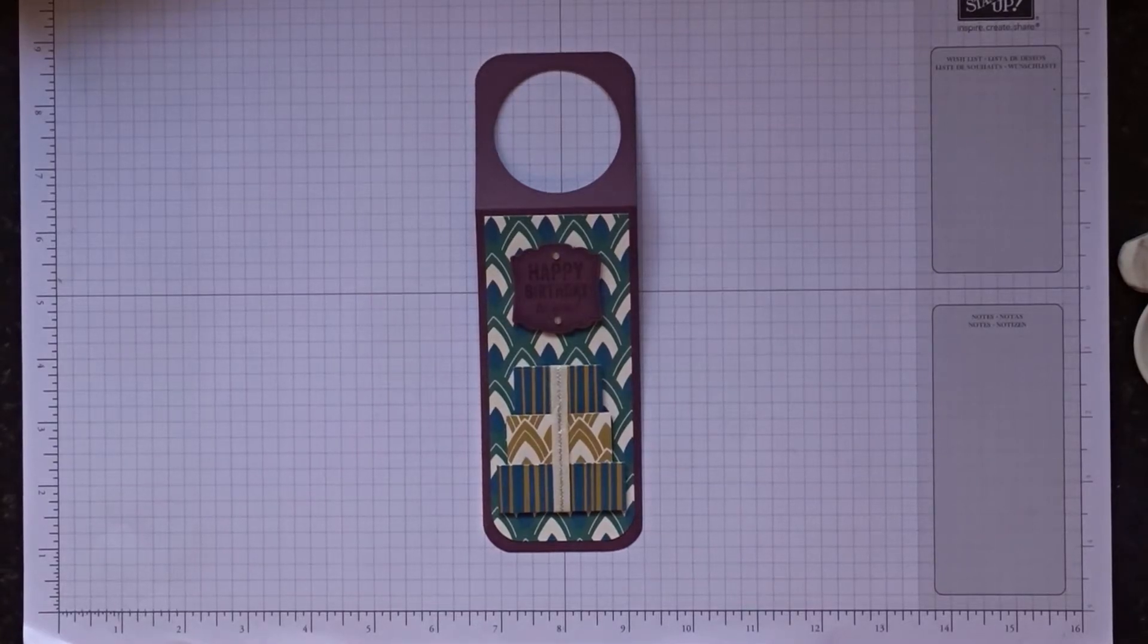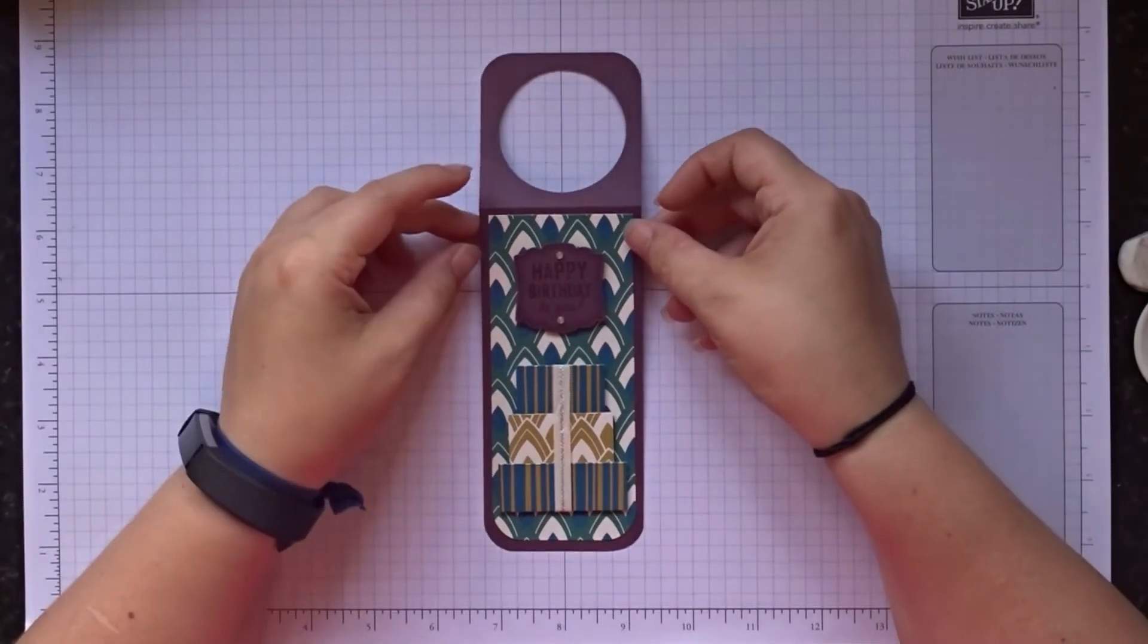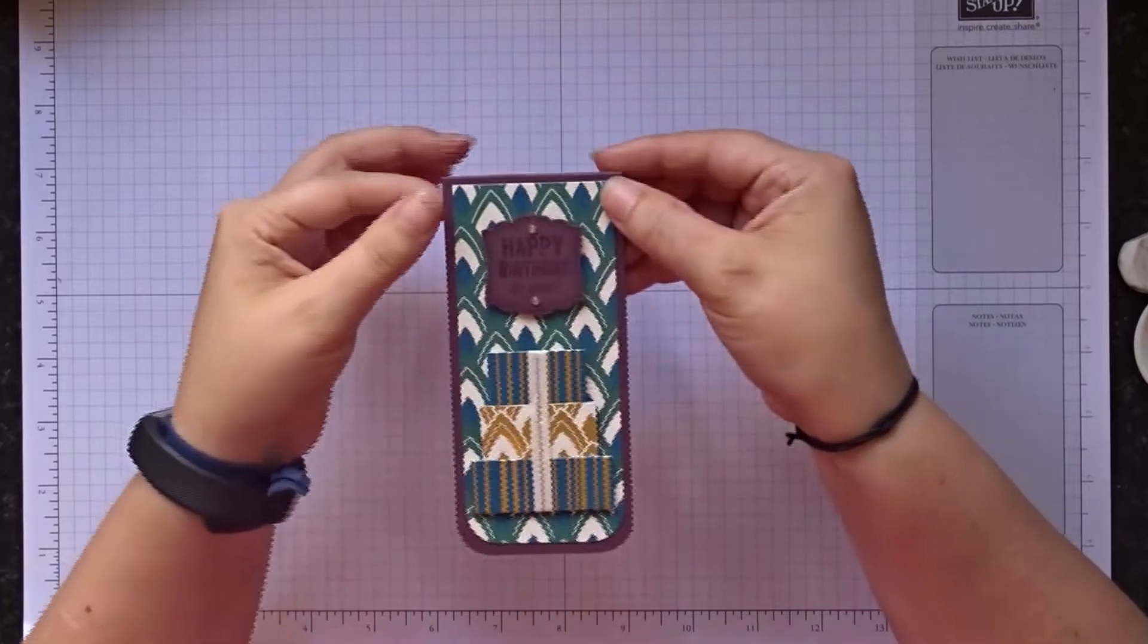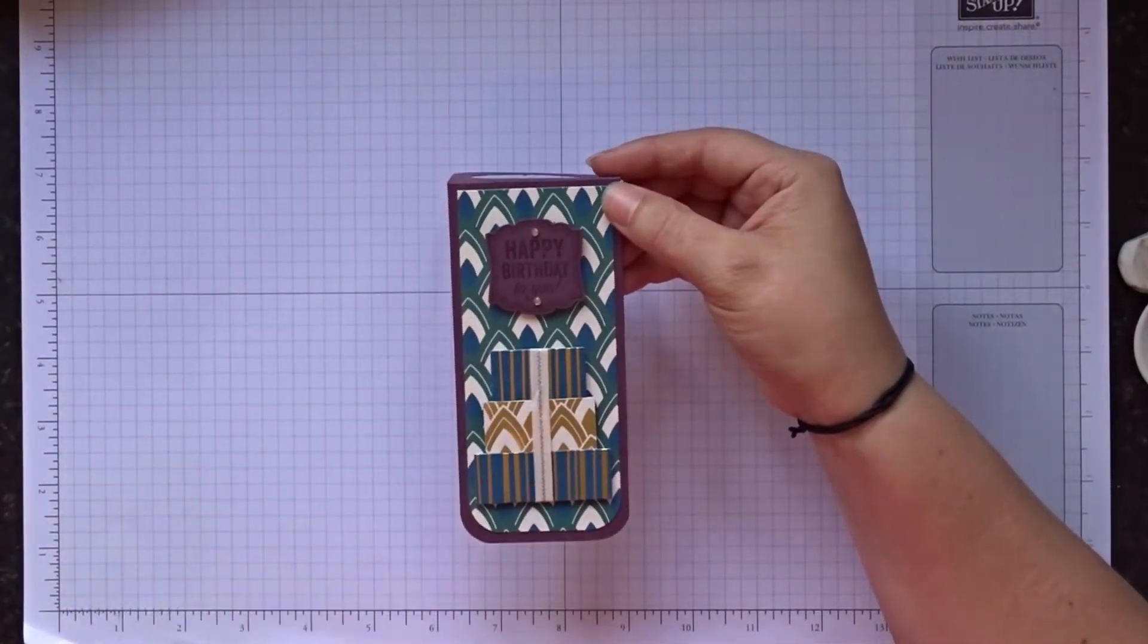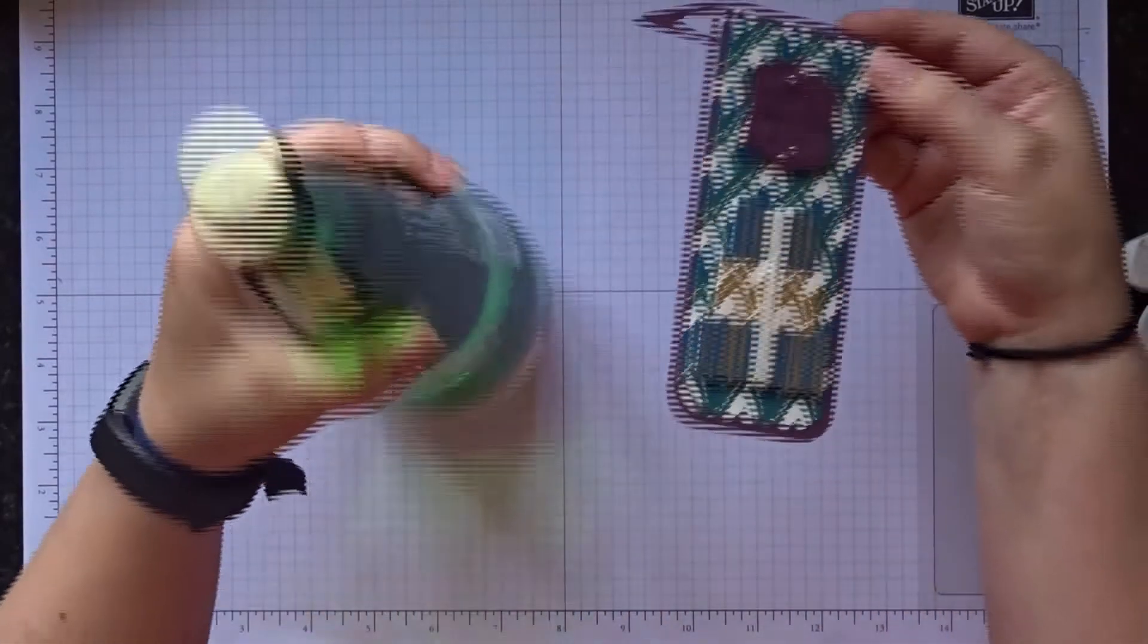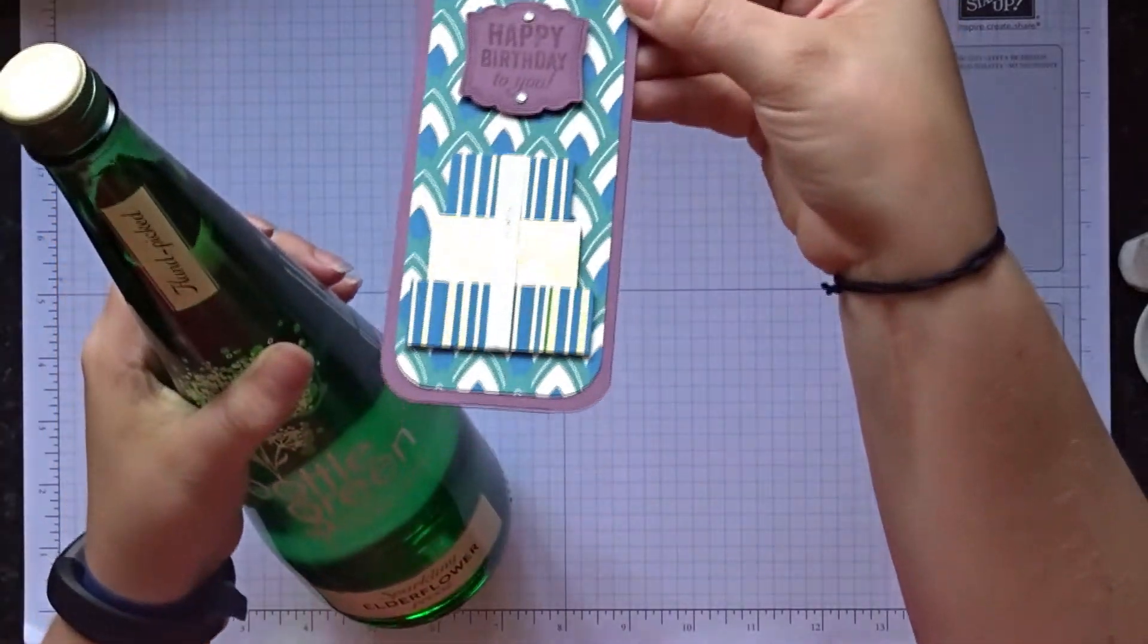Hi everyone and welcome back to Penguin Crafts. Today I'm going to be making a beautiful little gift tag for a bottle of wine or in this case it's some sparkling water.